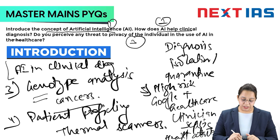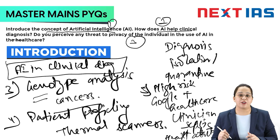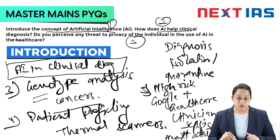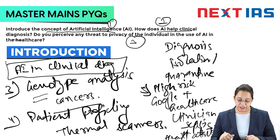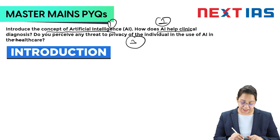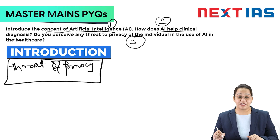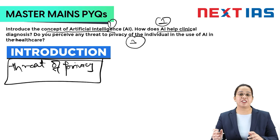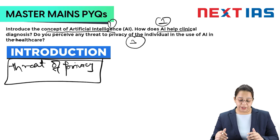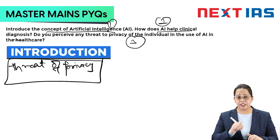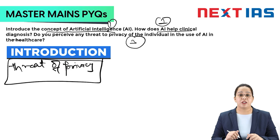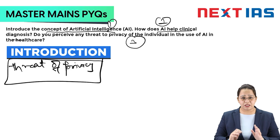The next part of the question is: do you perceive any threat to privacy of the individual in the use of AI in healthcare? The heading here is 'Threat to Privacy.' Whenever there is big data available with an organization or institution, there is always a threat that a breach can occur. Recently, in a hospital in Kerala, data of almost two lakh patients was compromised. There is always this risk of threat.